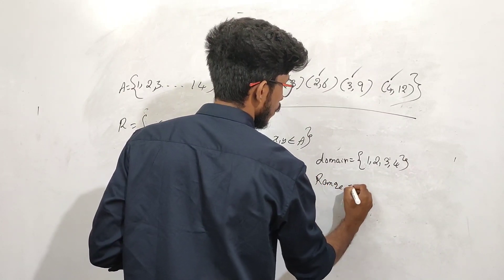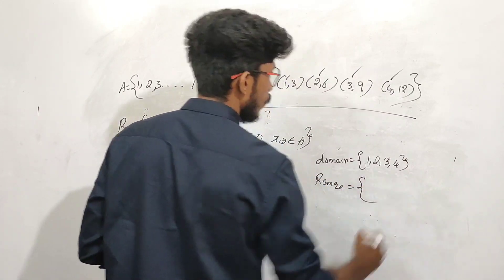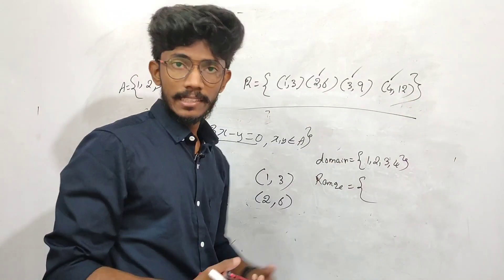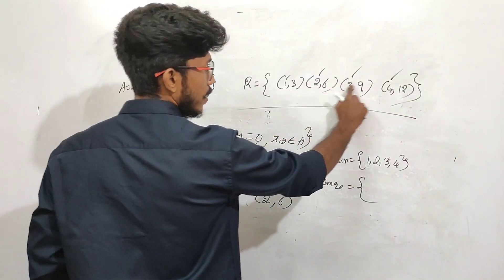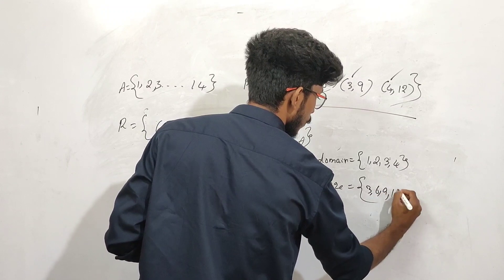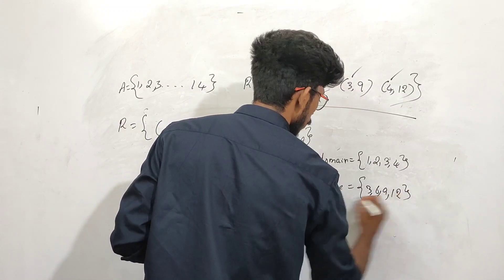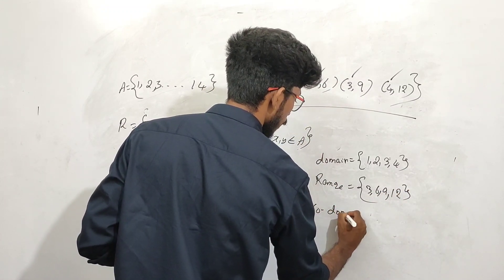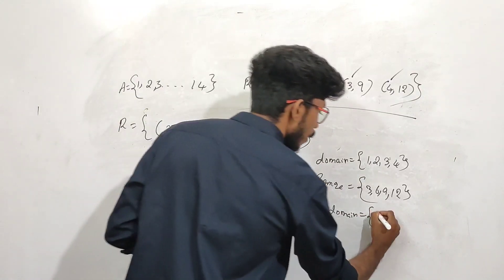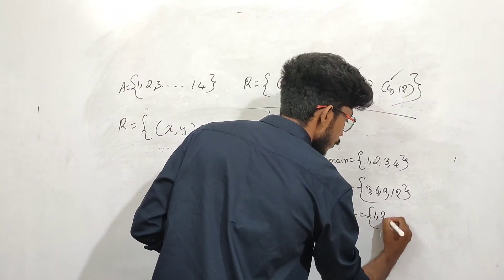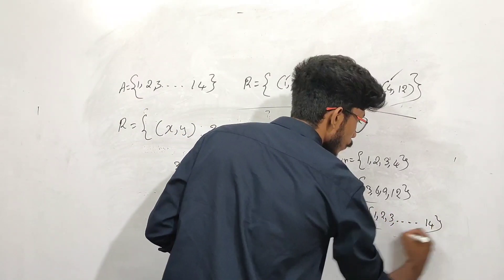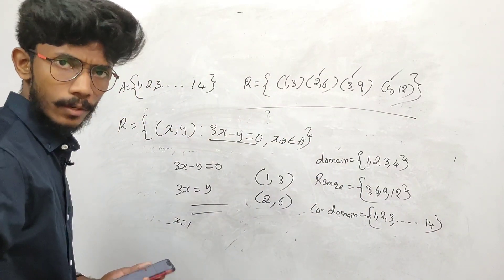What is range? Range is the y-axis values. The values are 3, 6, 9, 12. What is co-domain? Co-domain is the whole set A, which is 1, 2, 3 up to 14.